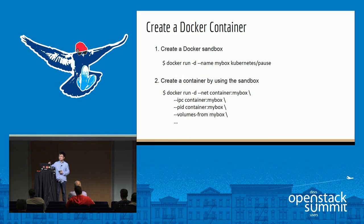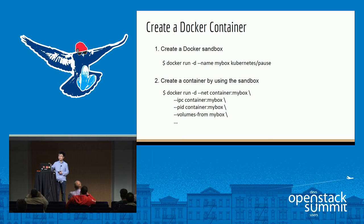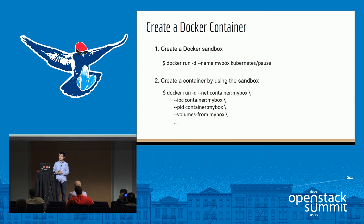This is the simplified version of the commands used to create a sandbox and container. The first command creates a sandbox as a Docker container using the Kubernetes pause image. This command creates an empty container that does nothing except reserve a set of Linux namespaces, so that in the future when we create a container in the sandbox, we can run that container in the same namespace to share resources. In the second command, we run the actual container, but we add options to make sure the container does not create its own namespace — instead it joins the namespace of the sandbox container.